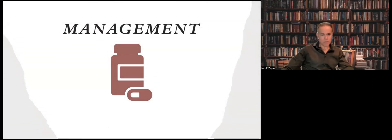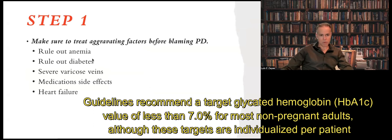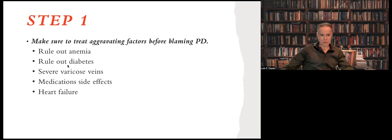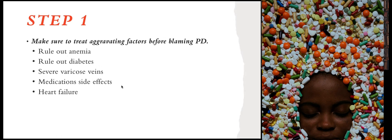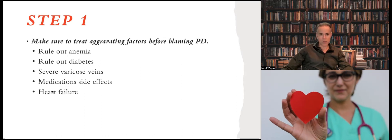Now let's talk about management. We will divide the management into steps. Step one: before blaming Parkinson's disease, you need to rule out common conditions or factors that might make these symptoms worse. For example, if you have anemia, treat your anemia. Make sure that you are getting good treatment for diabetes — you need to control your glucose. Treat severe varicose veins. Check your medication list; ask your doctor to review it, as there are many medications that might exacerbate orthostatic hypotension. If you have heart failure, treat your heart failure.